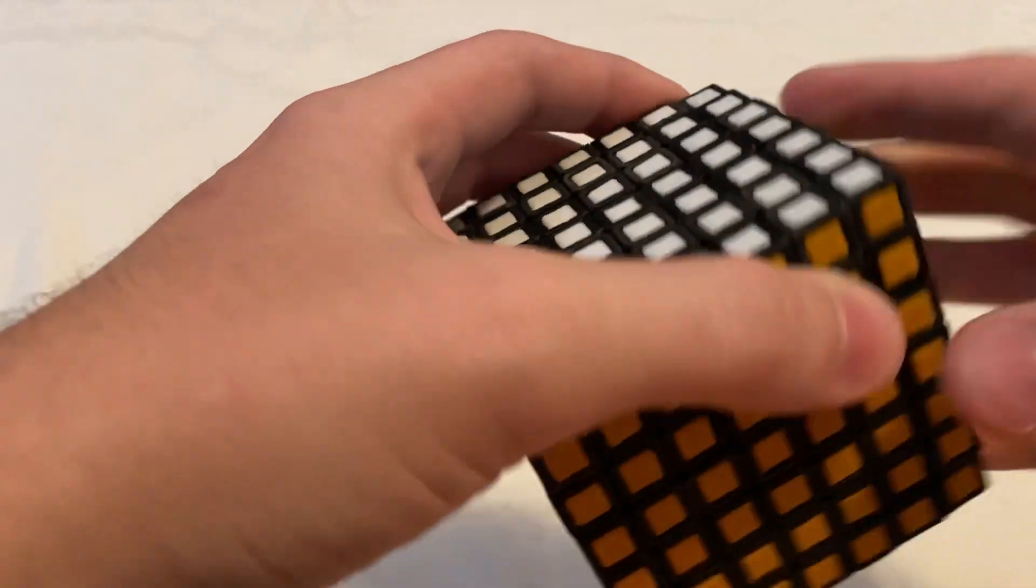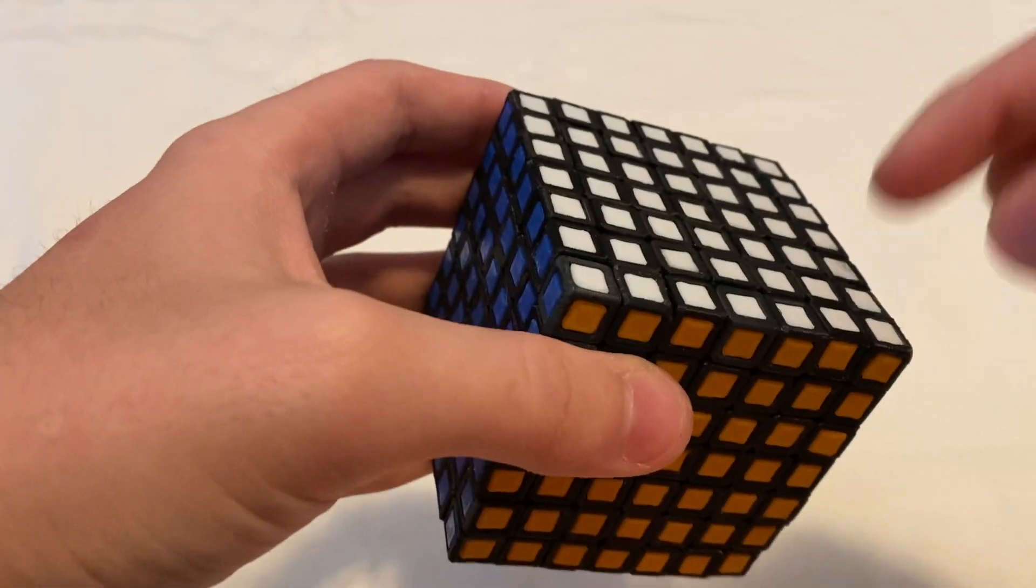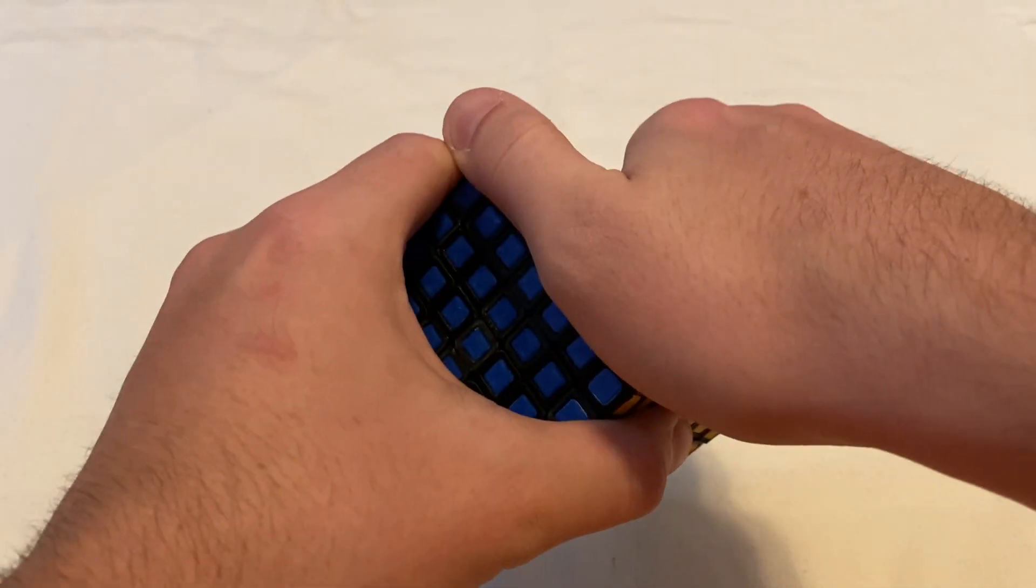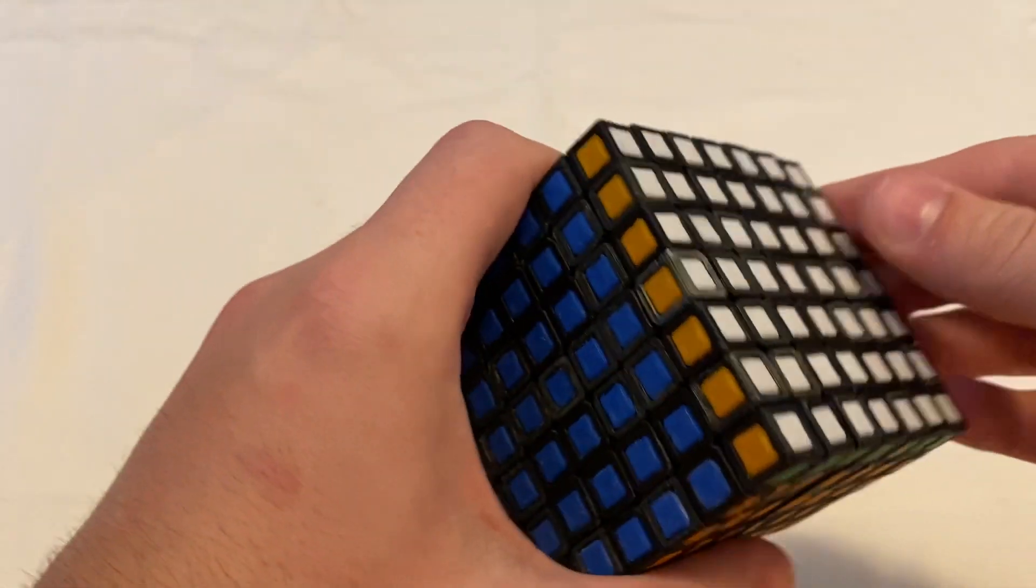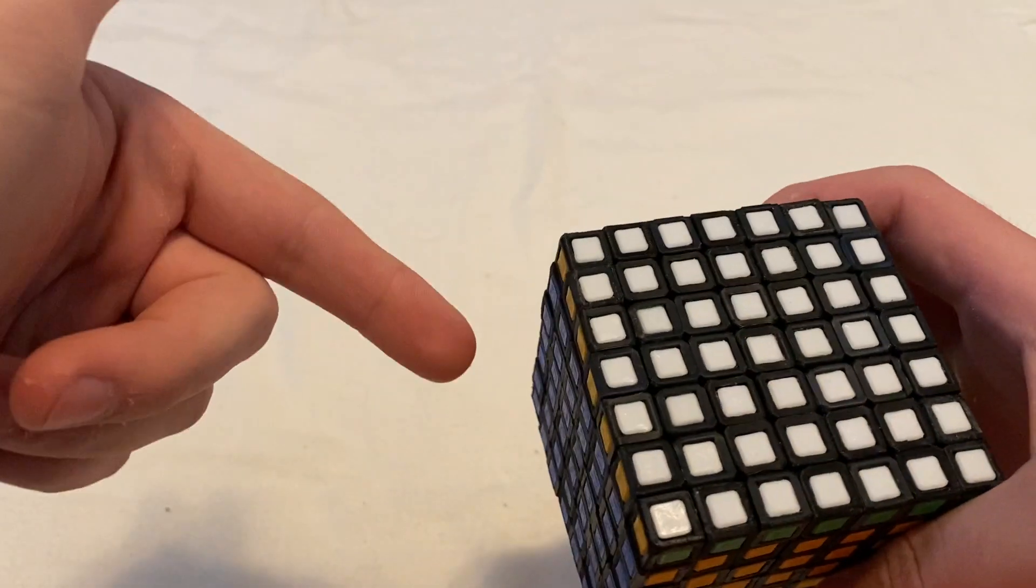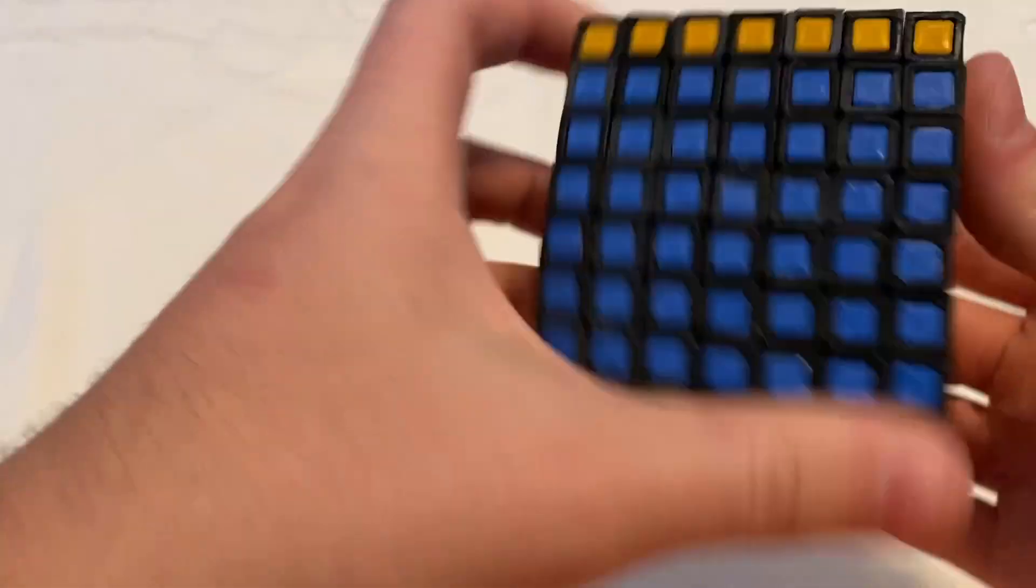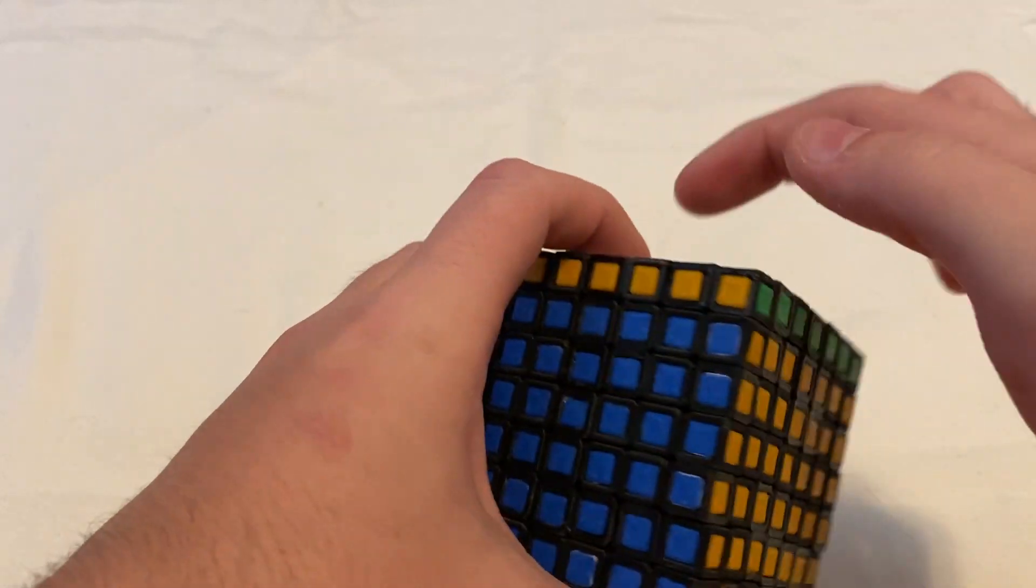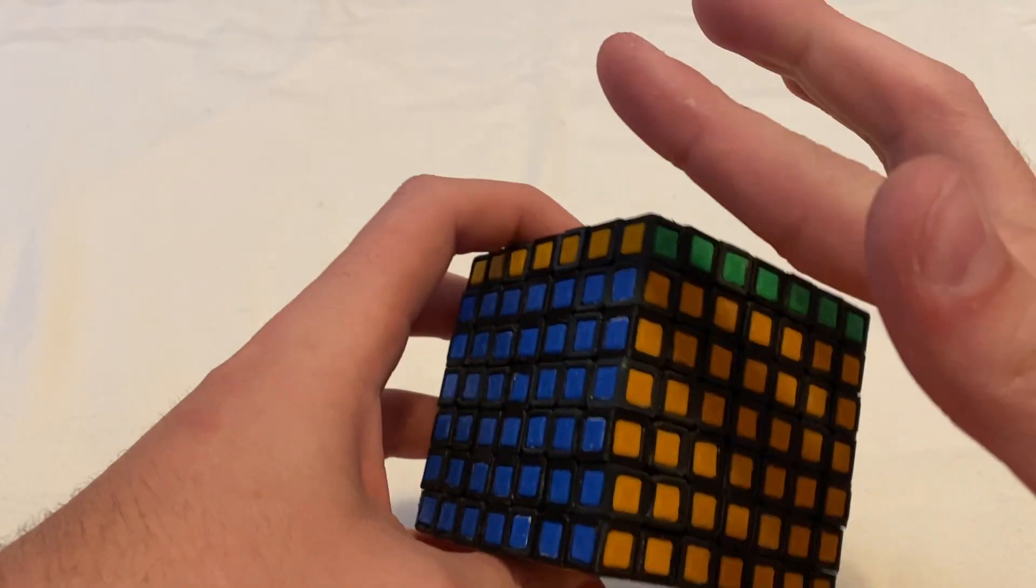Yep, I used elastic cords to hold the corners on. That way when you do a turn, they bend out of place temporarily and then go back. So they kind of go up over these pieces and then back down.